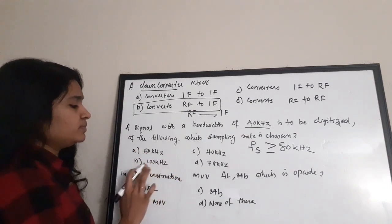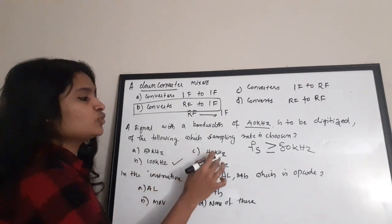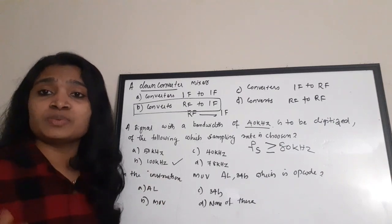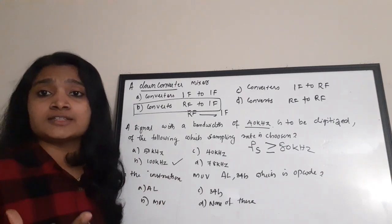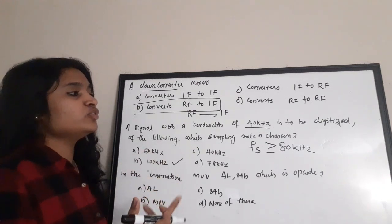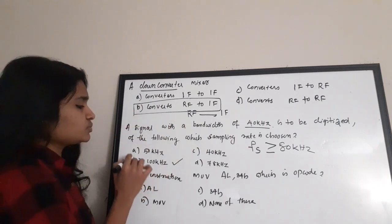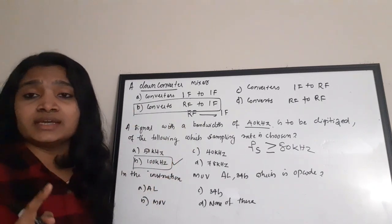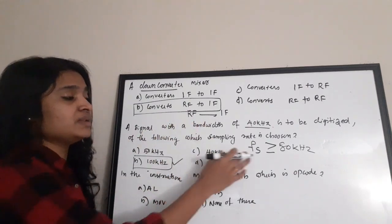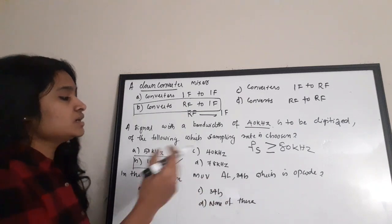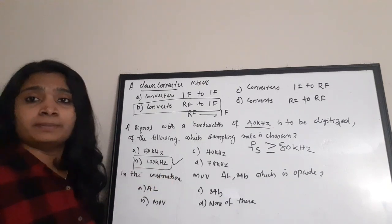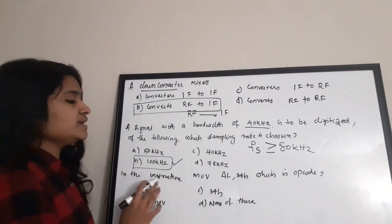From the options: a) 50 kHz — no, too low; b) 100 kHz — yes, it satisfies fs ≥ 80 kHz; c) 40 kHz — no; d) 78 kHz — no, still below 80 kHz. We must choose a sampling rate per the Nyquist criteria to perfectly reconstruct the signal. The correct answer is option B: 100 kHz.